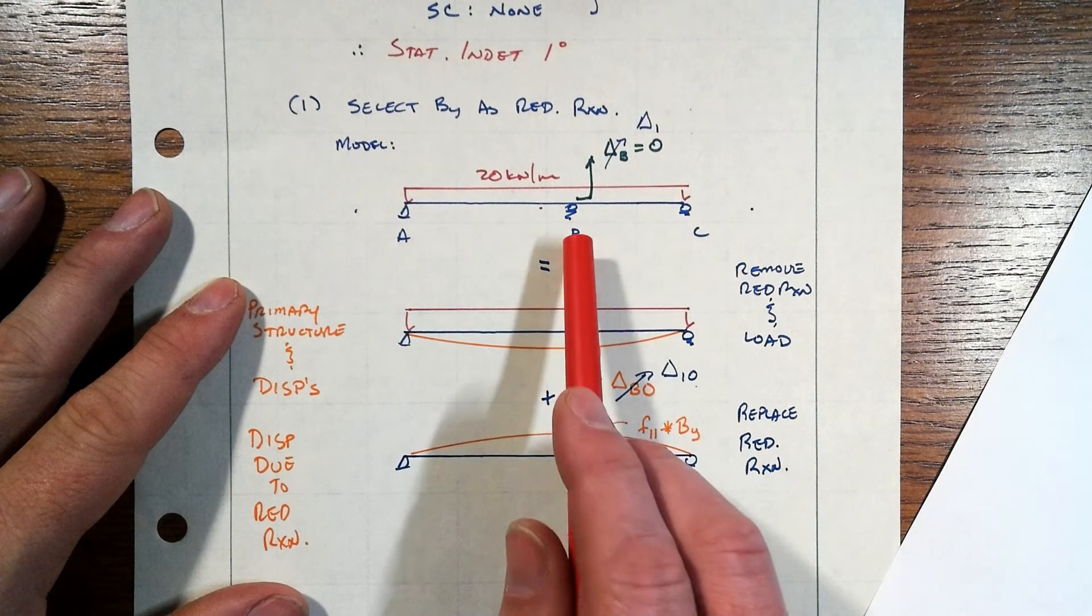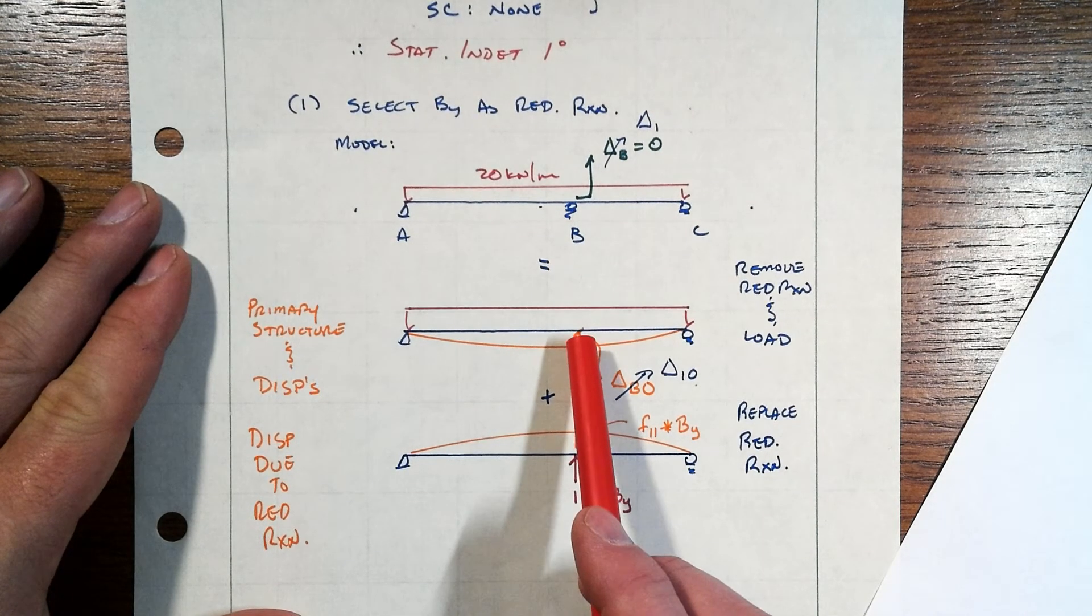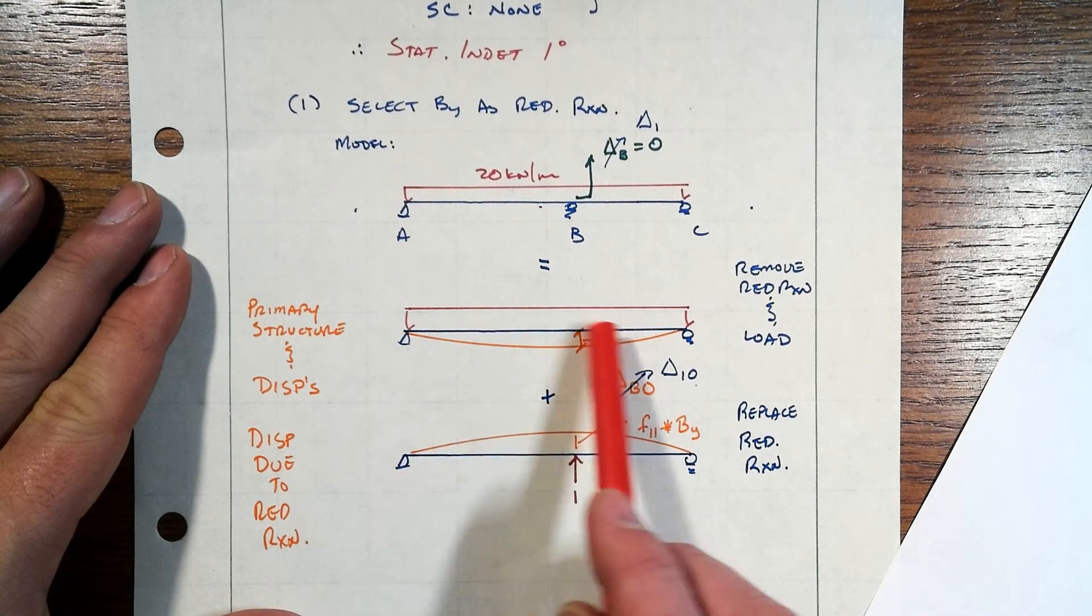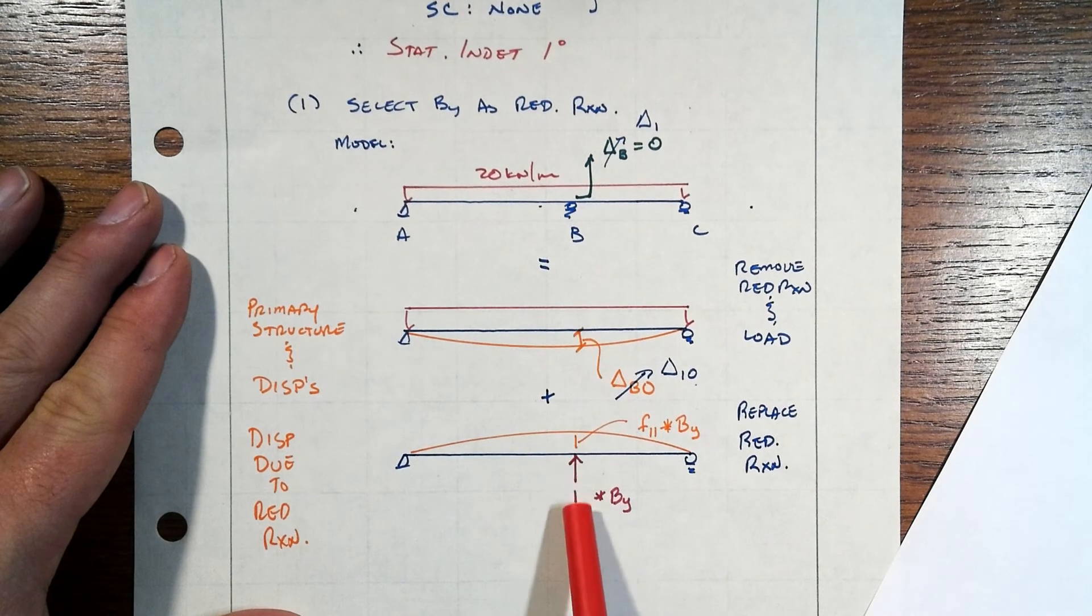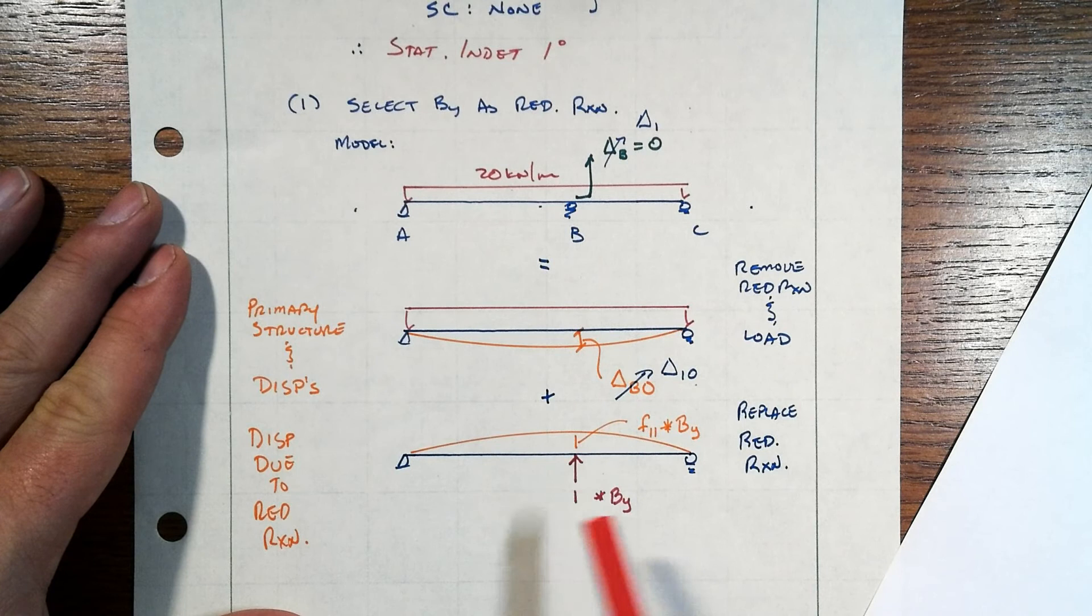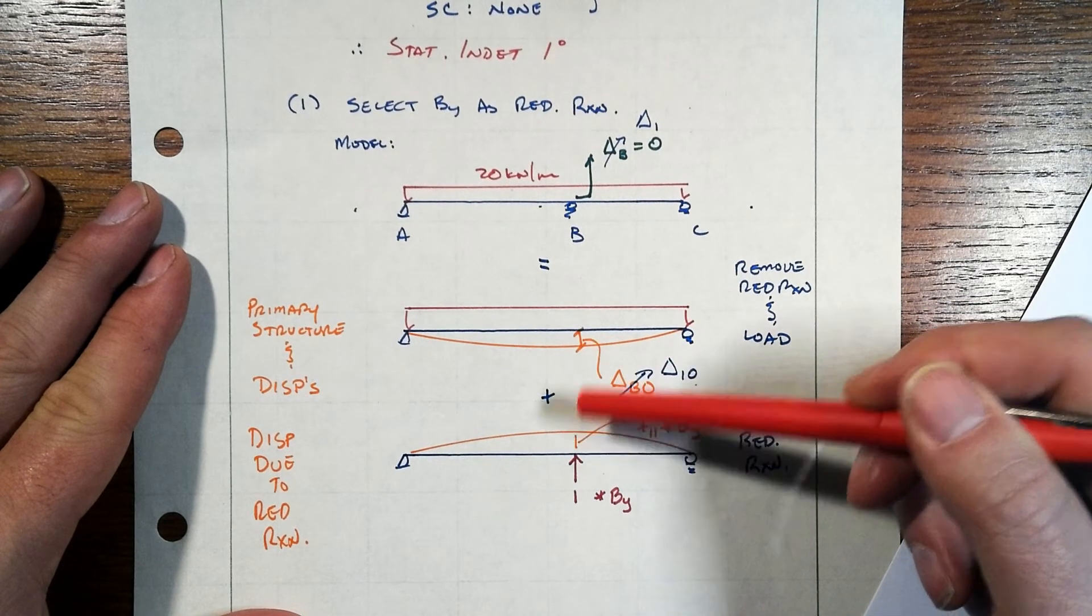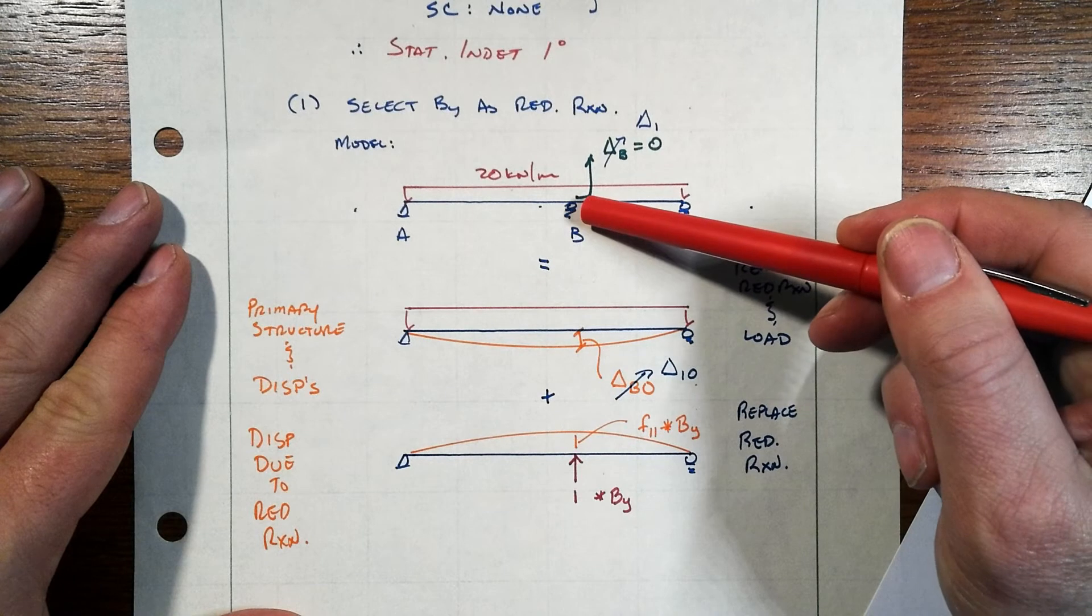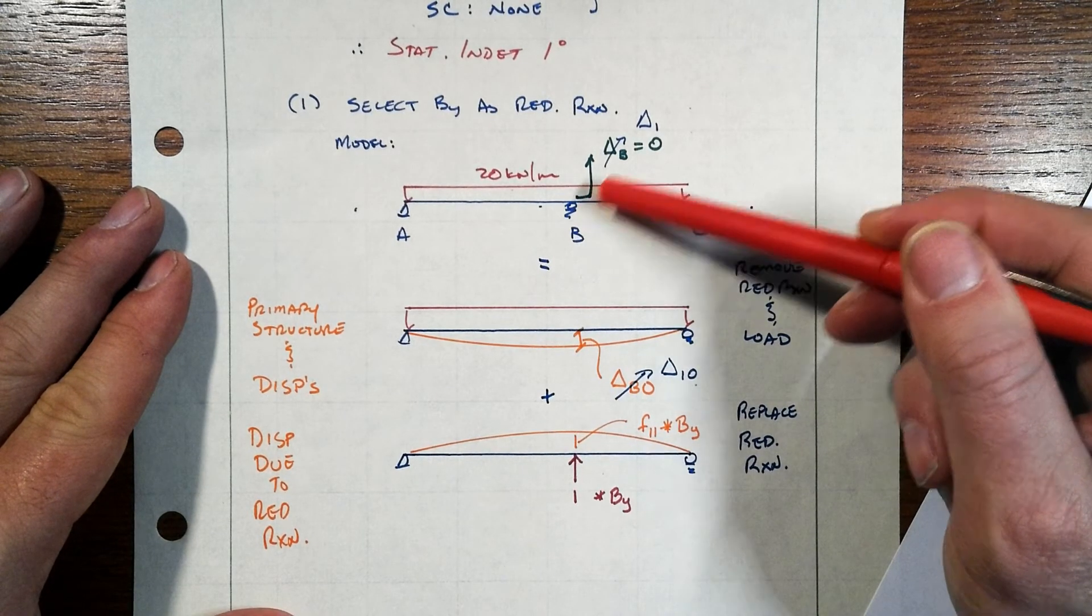So, that's what we're going to do. This whole system will get rid of one of these reactions. I chose B_Y and then allow the system to respond to these loads, the actual loads, let it deflect. And then we're going to push it back into place such that when we superpose or add these two together, we're going to end up back in the original condition. In the original condition, that displacement at B was equal to zero.